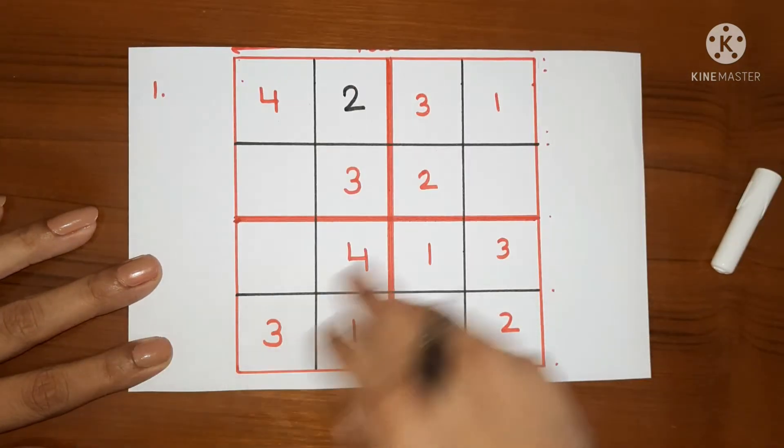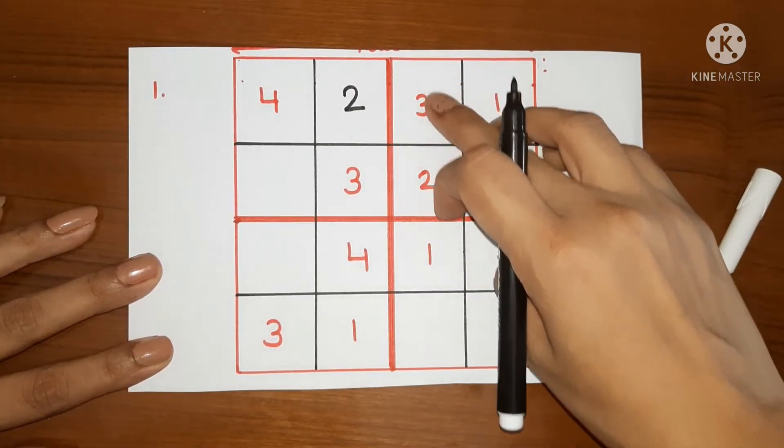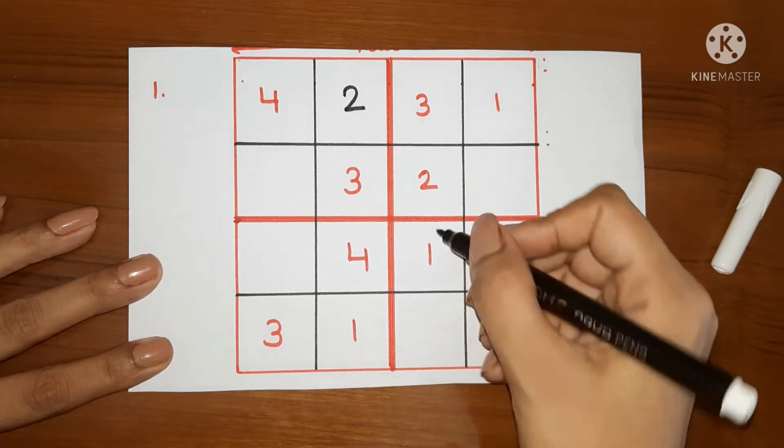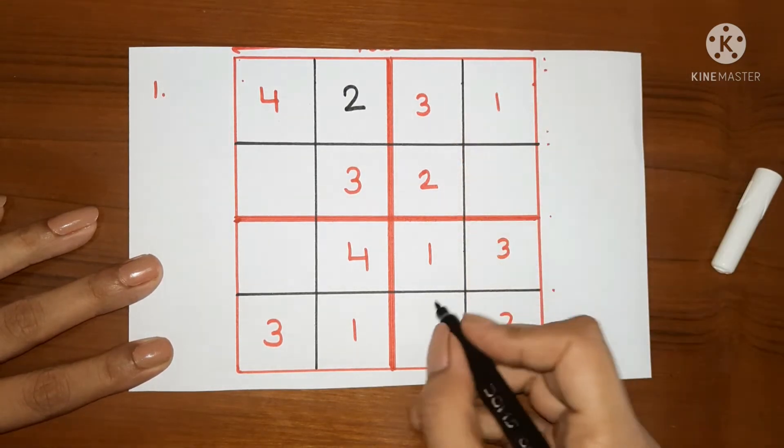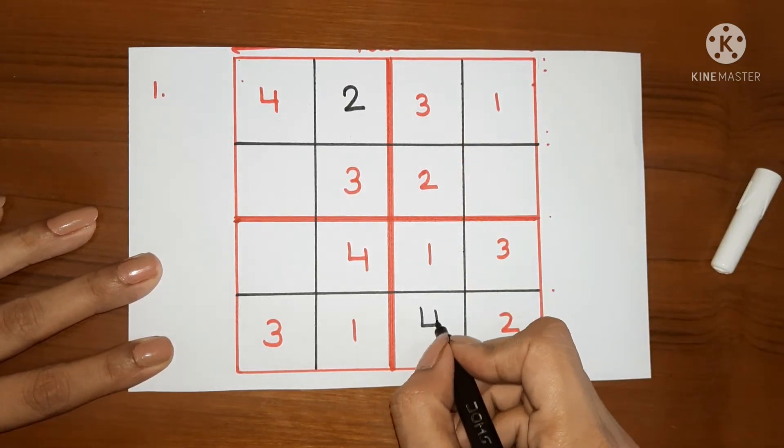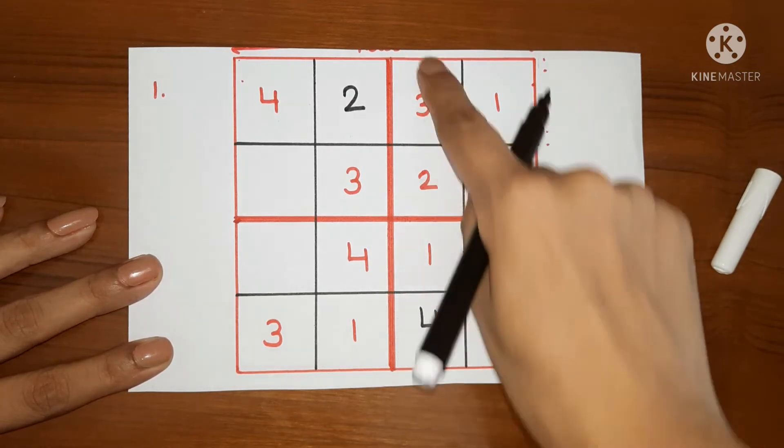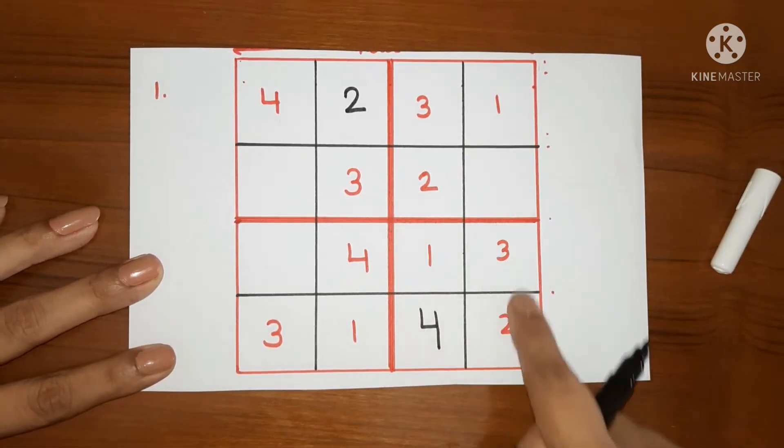Now, we will check again. Is there any other column that has 1 number missing? Yes, this column has only 1 number missing. 1, 2, 3 is here. So only 4 is missing. We will write 4 here. This way, this column and this box is completed.